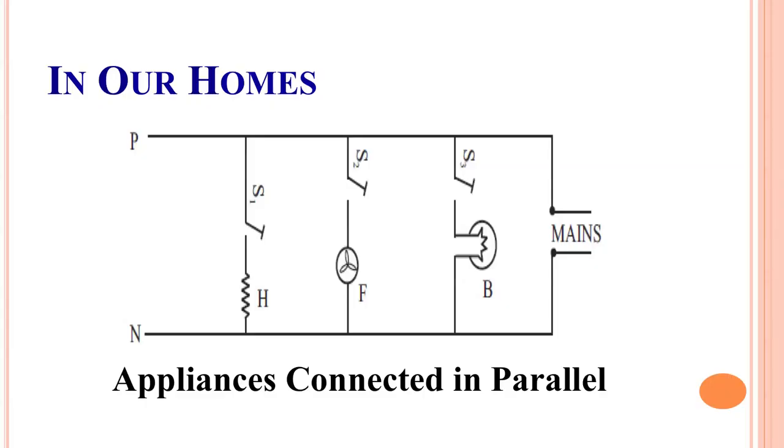The parallel combination has greater significance in our homes. We have many electrical appliances — fans, lights, and so on. These appliances are connected in parallel so that even if one appliance fails, the others keep working because current is still directed to them and the circuit remains connected.